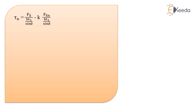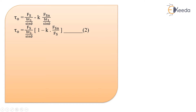Putting the value of sigma into equation 1 and substituting the expression for tau_s, then taking common the term Fs divided by (Bt1/sin phi), we are left with the bracket 1 minus k times Fsn divided by Fs. From the Merchant circle diagram and equation A, we can get Fsn by Fs as tan of (phi plus beta minus alpha).